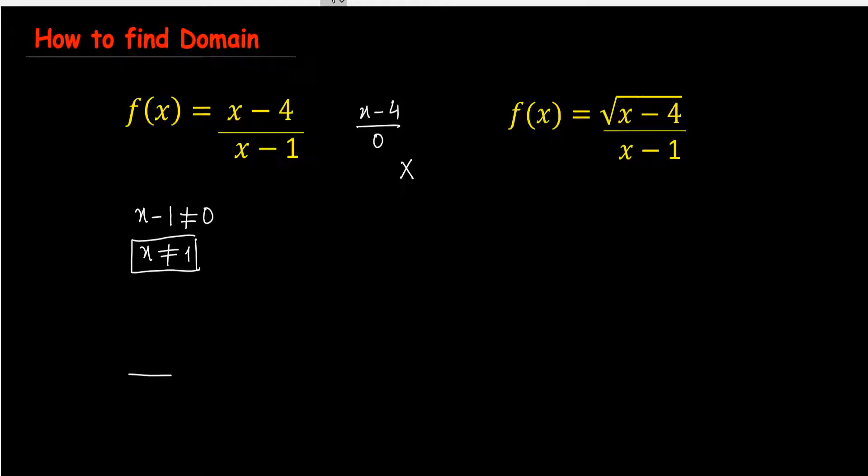The other way to write the domain is very simple. We can use a number line. This is 1, 2, 3, and this is 0 and minus 1.